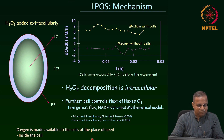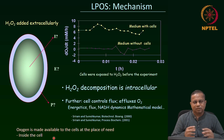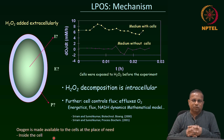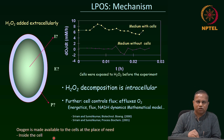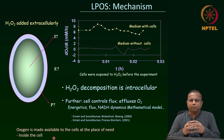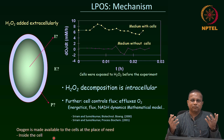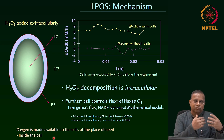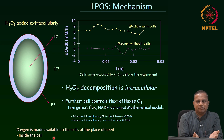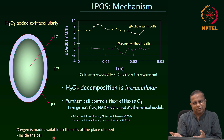So, oxygen is made available to the cells at the place of need — inside the cell — and whatever is not needed comes out, which is what we are actually measuring. We will discuss a few papers so that we get an idea of the wide scope of the applicability of these principles, right from the idea to overcome one of the fundamental challenges to understanding the mechanism. See you in the next class. Bye.